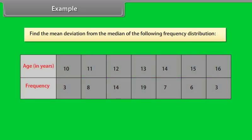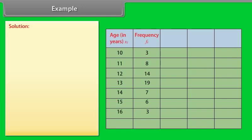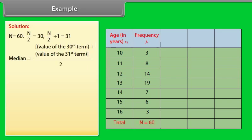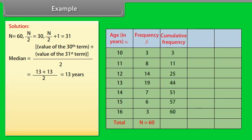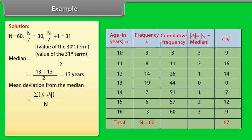Example: Find the mean deviation from the median of the following frequency distribution. The sum of frequencies Fᵢ is 60. The median of the distribution is found to be 13 years. The cumulative frequency is calculated by adding the previous frequency to the current. The absolute deviations |Xᵢ − M| are denoted by Dᵢ. The product of absolute values and frequency sums to 67. The mean deviation is found to be 1.12 years.